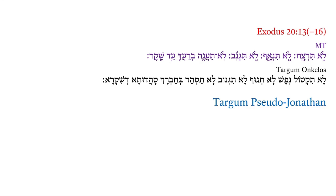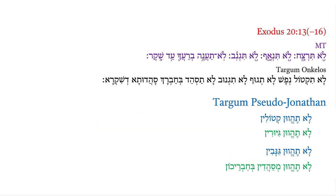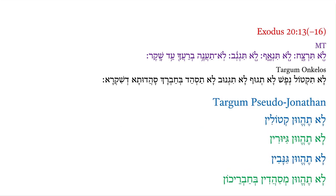Now let's see Targum Pseudo-Jonathan. That's a lot of text, so to make it a little bit easier to read, we could use alternating colors of blue and green. What I want to do in this video is just to start off and show that in the mass of text, we do actually have the four commands that we see in verses 13, 14, 15, and 16 in the Masoretic text. So let's just look at those right now.